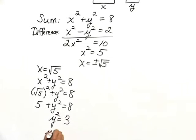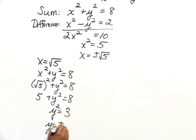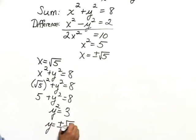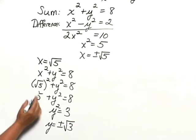So y has to be the positive or negative square root of 3. Again, we only want to use the positive square root of 3, since we're dealing with lengths. So we have a solution of x being the square root of 5, and y being the square root of 3, and those check in the problem.